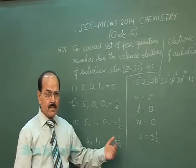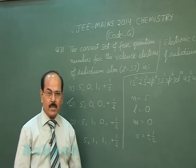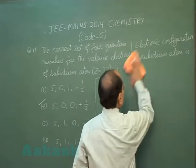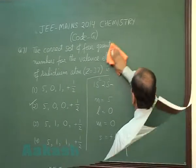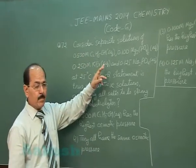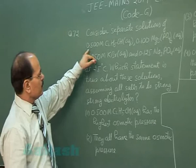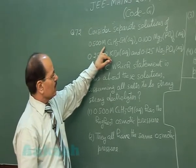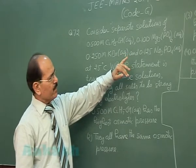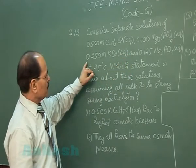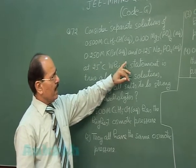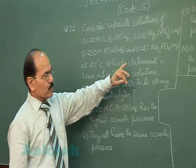Now we will discuss question number 72, which considers separate solutions of 0.500 molar ethanol aqueous, 0.100 molar magnesium phosphate aqueous, 0.250 molar KBr aqueous, and 0.125 molar sodium phosphate aqueous.